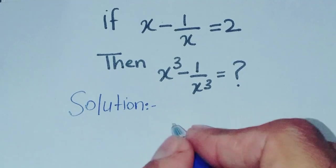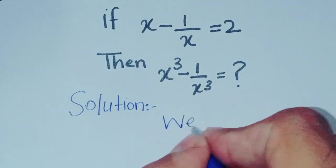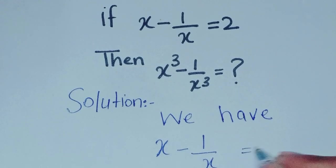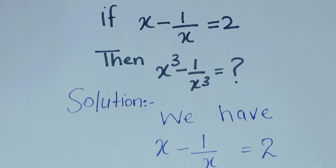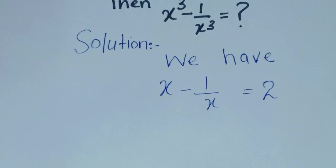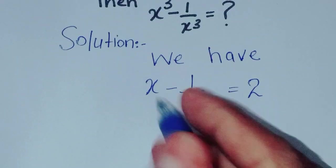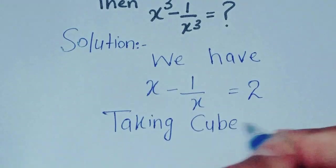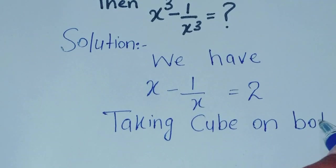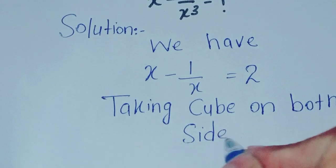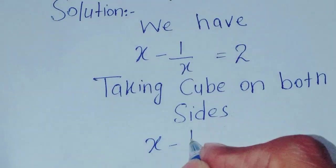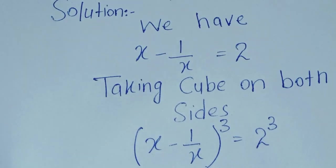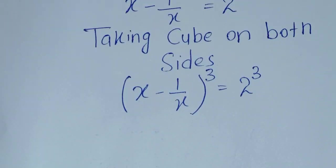First of all, we have x minus 1 over x is equal to 2. Now, taking cube on both sides: x minus 1 over x, whole cube, is equal to 2 cubed.